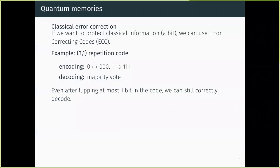Classically we have the idea of error correcting codes. We have one bit — it could be zero or one — and we encode it in a larger string of bits such that changing a few bits will not affect the outcome. For example, the repetition code: you take a zero and encode it as three zeros, and one as three ones. To decode, you do a majority vote. If you only change one of the three bits, decoding still gives you the right information. If you change two of them, you get a logical error.